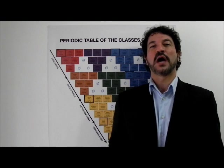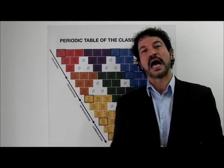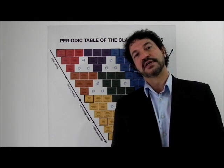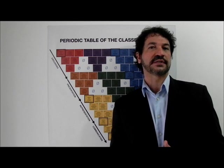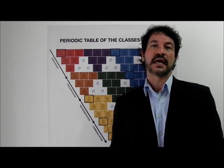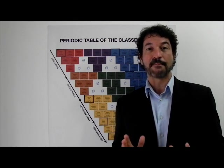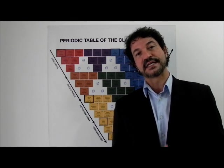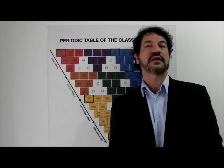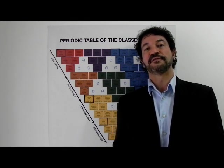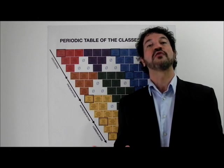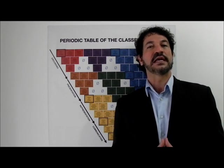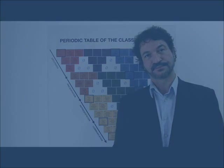Hi. In this video I will explain how the periodic table of classes of science must be read and interpreted, then I will show how it can be applied to phenomena of reality, and finally I will discuss the philosophical consequences of adopting a realistic theory of science.